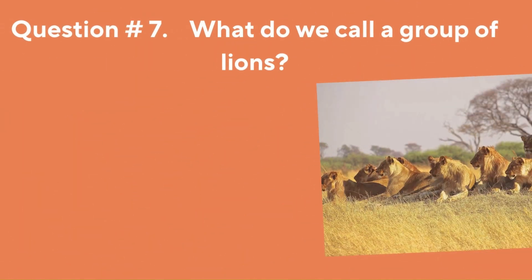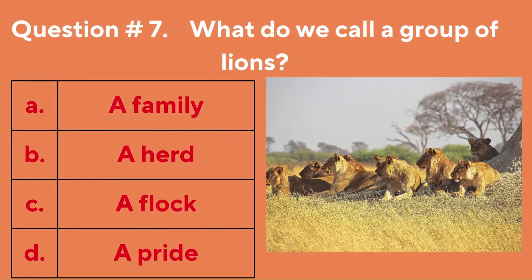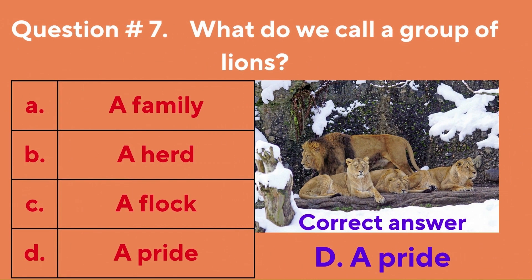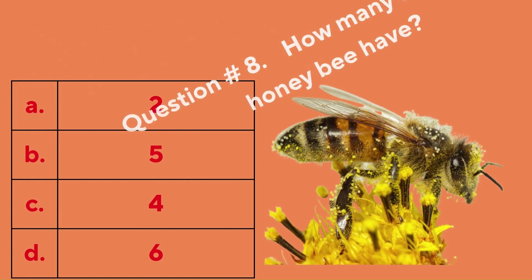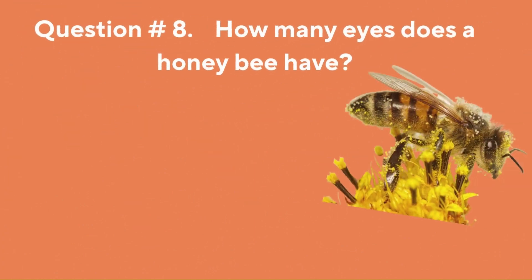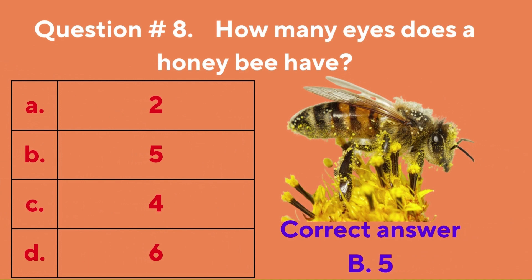Question number seven: what do we call a group of lions? A. A Family, B. A Herd, C. A Pride, D. A Pack. The answer options are: A. 2, B. 5, C. 4, D. 6. The correct answer is B. 5.